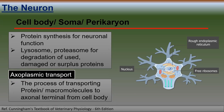Axoplasmic transport is the process of transporting proteins or macromolecules from the cell body to the axon terminal. Because proteins and other molecules are formed in the cell body, they must be transported to the axon terminal — for example, synaptic vesicle membranes are formed in the cell body and transported to the axon terminal.